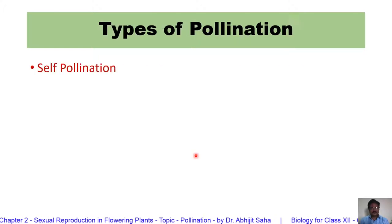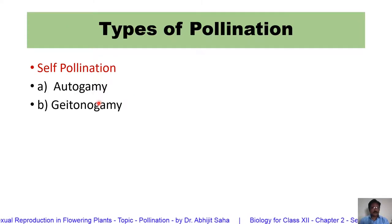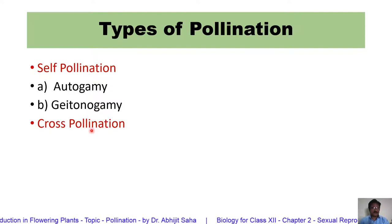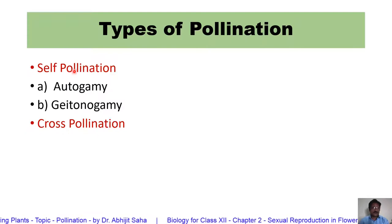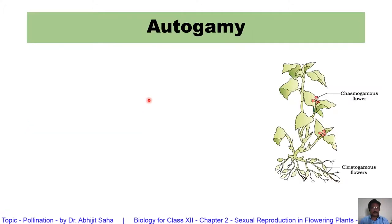Types of pollination: the first is self-pollination. Under self-pollination, we have autogamy and getonogamy. The second type is cross-pollination. So we mainly will study self-pollination and cross-pollination. Under self-pollination, we shall study autogamy and getonogamy.